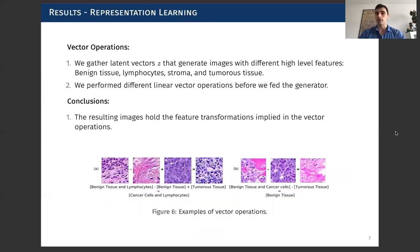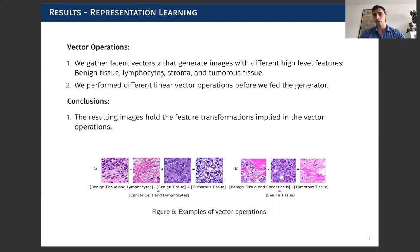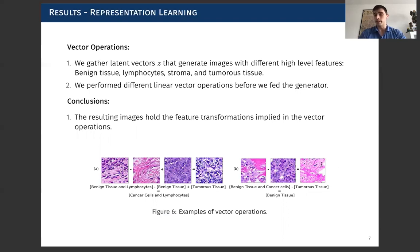Finally, we did some vector arithmetic operations with the semantic meaning of the latent vectors. We took different latent vectors with associated meanings of benign tissue, lymphocytes, stroma, and tumour tissue, and performed simple arithmetic operations. For example, we can see benign tissue with cancer cells, and we subtract the latent vector of tumour tissue. From the resulting vector, we fed it to the generator, and indeed the generated image is completely clean of cancer tissue.